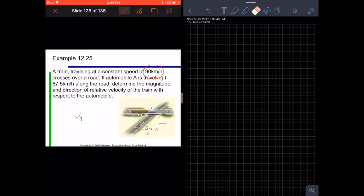So in this case, when we draw this, we are going to get a diagram pretty much like this one. And this is the velocity of the automobile, so this is equal to 67.5. And then, this is going to be the velocity of the train, VT equals 90 km/h.